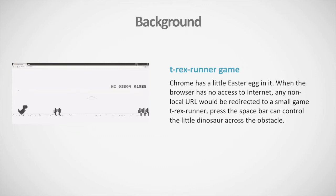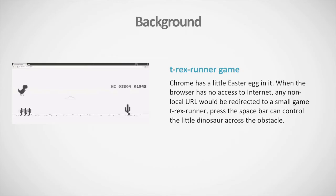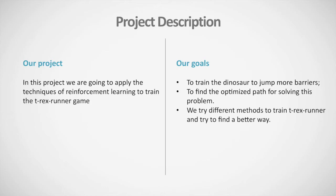Our project is about the T-Rex Runner game. Chrome has a little easter egg in it — when the browser has no internet access, any non-local URL would be redirected to a small game called T-Rex Runner. Pressing the spacebar controls the little dinosaur across obstacles. In our project, we apply reinforcement learning techniques to train this game, with the goal of training the dinosaur to jump more barriers and find the optimized path. We also try different methods to find a better way.